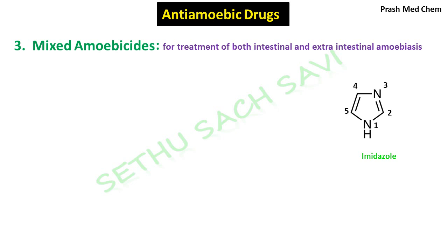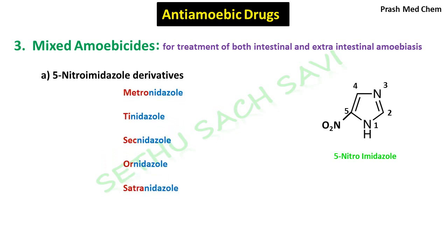Now, if you substitute the fifth position of imidazole with an NO2 group, it would become 5-nitroimidazole. Some of the derivatives of 5-nitroimidazole were shown to be very much effective in the treatment of both intestinal and extra-intestinal amoebiasis — that is, they belong to the mixed amoebicides category. And the name of the drugs end with nidazole, N-I-D-A-Z-O-L-E. Examples are metronidazole, tinidazole, secnidazole, ornidazole, and satranidazole.